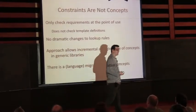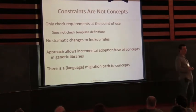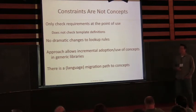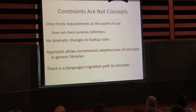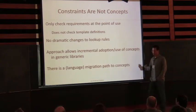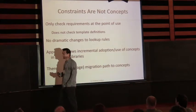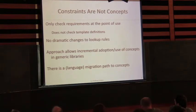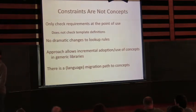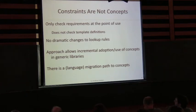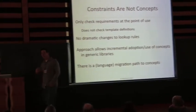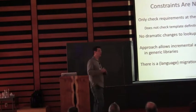Constraints aren't concepts — we're not aiming for a full concept solution. We're only looking at checking at the point of use, which is a good feature to have. You can at least catch these errors before you get into the template instantiation stack. We're not trying to do template definition checking and we're not trying to change any lookup rules. The way you write templates today is going to be the way you write them with Concepts Lite — the same ADL rules, the same scoping rules, two-phase lookup — all of that still applies. One thing we actually like about this approach is that it allows incremental adoption.